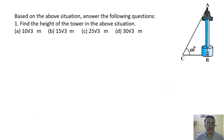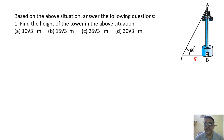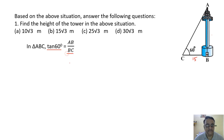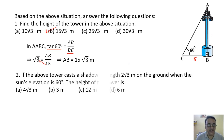Question 1: Find the height of the tower. BC = 15 is given and we need AB. Adjacent is given and opposite is to be found, so we use tan 60° = AB/BC: √3 = AB/15, giving AB = 15√3. The correct option is option B.